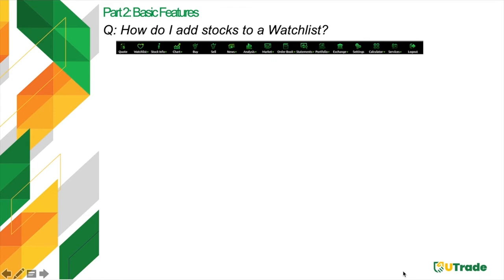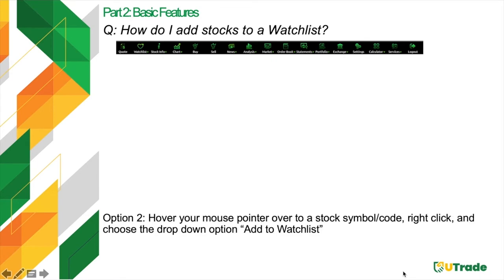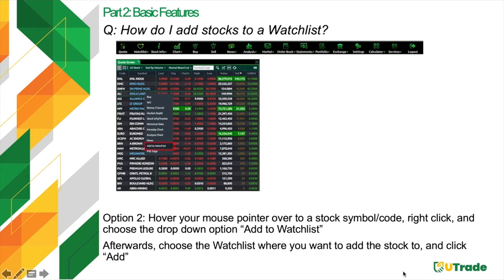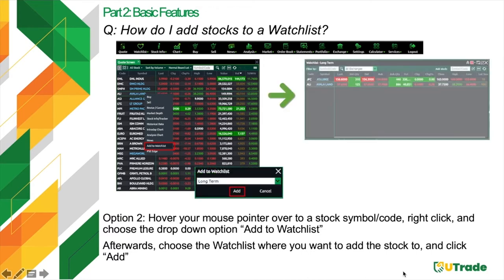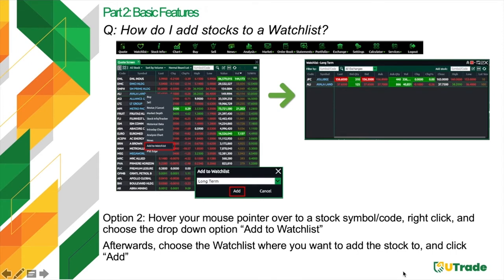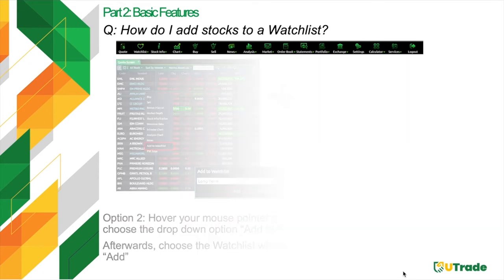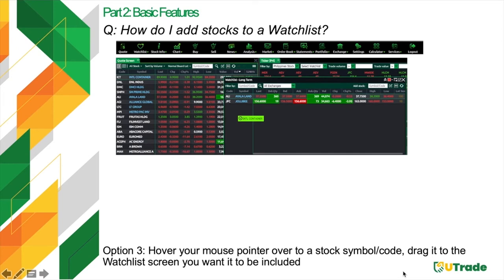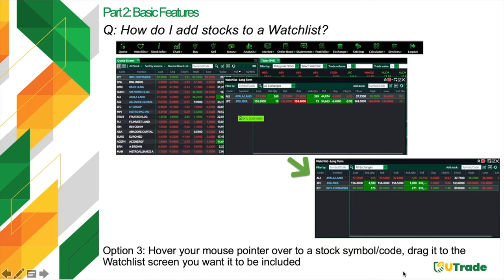Option three requires you to drag the selected stock to your watchlist. You can add up to 30 stocks per watchlist and create as many watchlists as you please. To remove a stock from your watchlist, click the Edit button located beside the add stock bar. Click the red box before the stock code you wish to remove and confirm by choosing Yes. Then click Edit again to remove the red boxes.